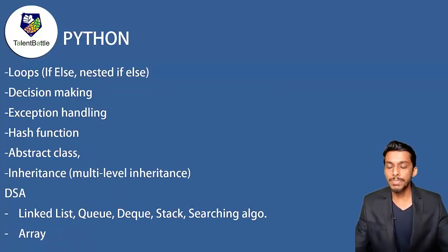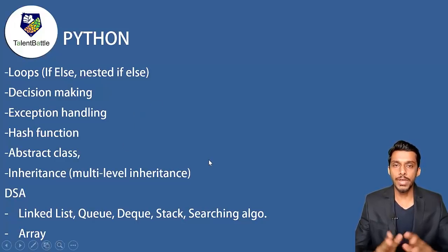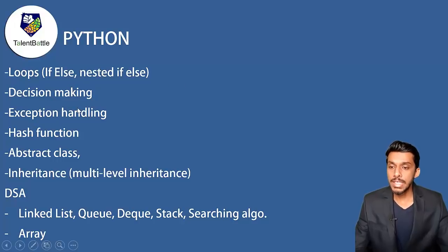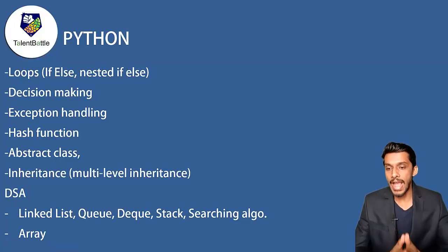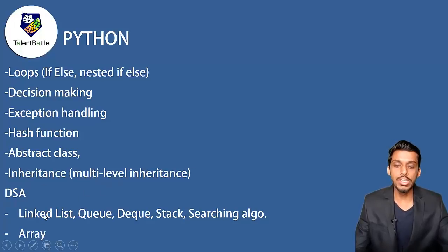For Python, loops are very important because two questions were asked, including combinations of loops with other concepts and if-else and nested if-else. There were also decision-making questions, exception handling, hash function, abstract class, inheritance, and multi-level inheritance. Then there were questions on data structure algorithms — linked list, queue, deque, stack, searching algorithms, and arrays.